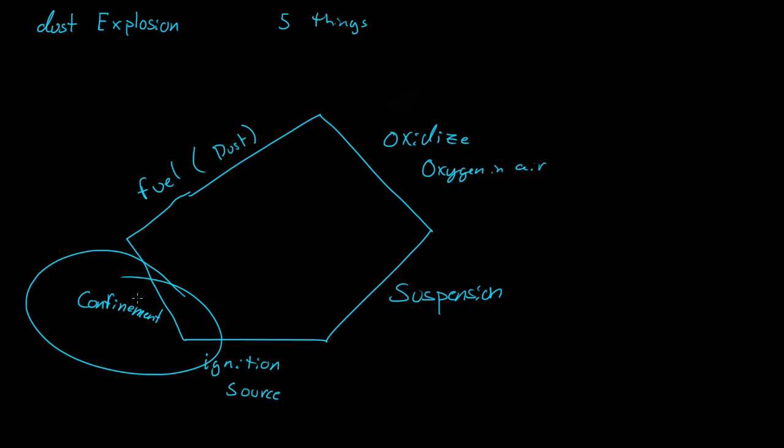So a way to prevent a dust explosion is maybe have walls that fall off at relatively low pressures. So maybe just like open chunks of the wall that just pop out at really low pressure differences. So then you don't have this massive explosion, you have a minor explosion. So those are just the five things you need for a dust explosion.